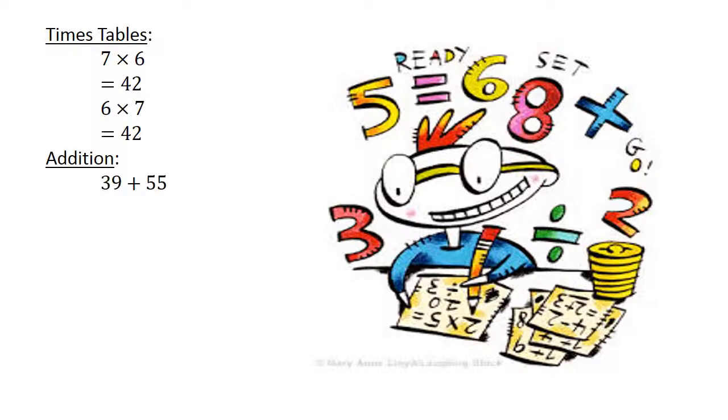Addition: 39 plus 55 equals 94. Subtraction: 13 minus 68 equals negative 55. Division: 24 divided by 8 equals 3.